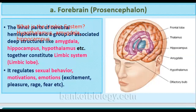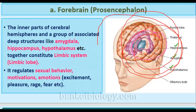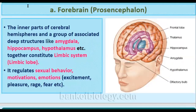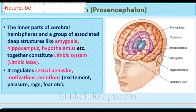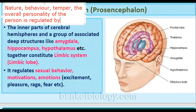The limbic system, comprising the hippocampus, amygdala, and hypothalamus, is responsible for regulating sexual behavior, motivations, emotions, excitement, pleasure, rage, and fear. Overall, the nature, behavior, temper, and the entire personality of a person is controlled by the limbic system.